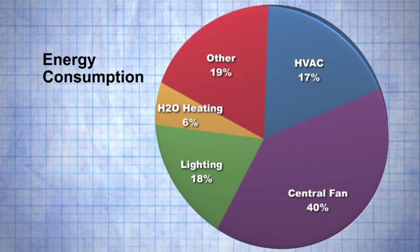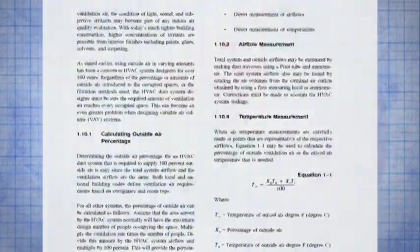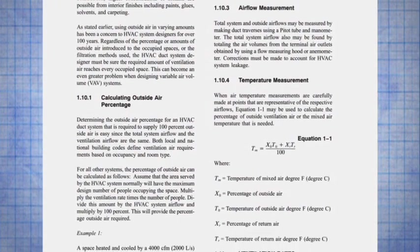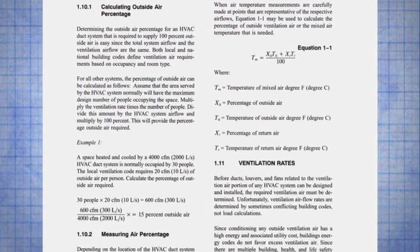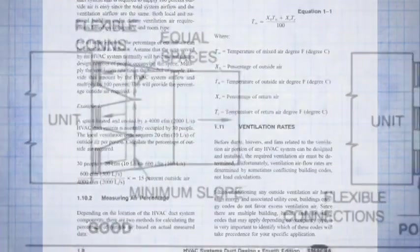This high energy use is partly due to the fact that most HVAC systems use the same duct system for ventilation air to maintain indoor air quality, as well as for heating and cooling. Since ventilation requirements are established by code, the fans and systems that provide that air cannot be turned off whenever the building is occupied.